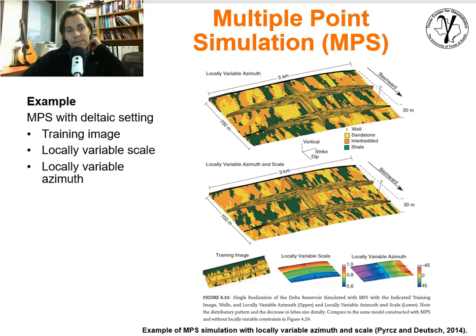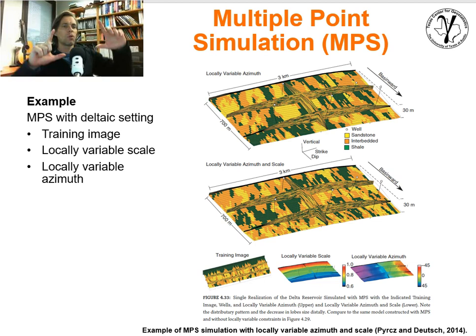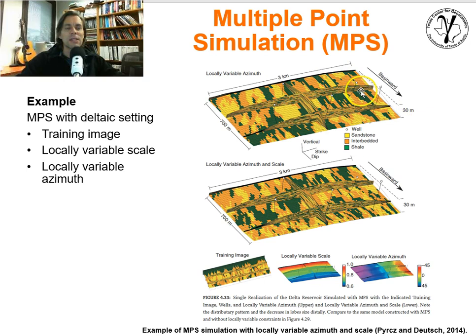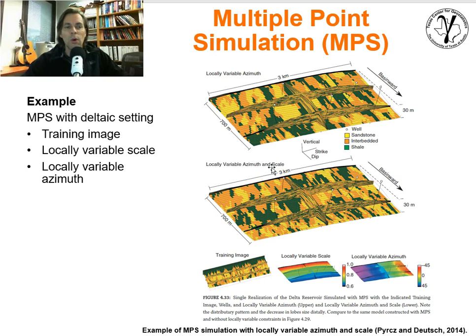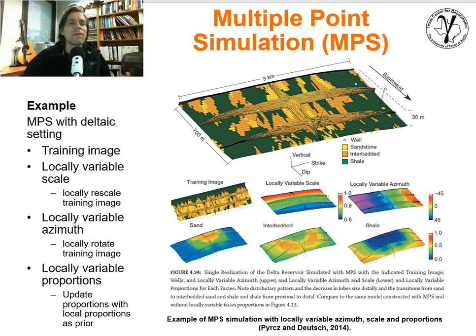It's a pretty powerful method. We can do a lot with non-stationary trends. Here we have an MPS model constructed using locally variable azimuth — the training image is oriented differently in the middle versus the sides of the model, giving a distributary pattern where features spread outward, like a deltaic pattern. We could also apply locally variable azimuth and scales together, rescaling the training image locally, resulting in bigger lobes proximally and smaller objects distally, basinward. So we can do that type of trend model as well.